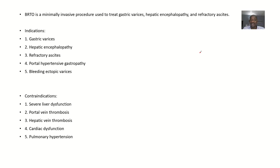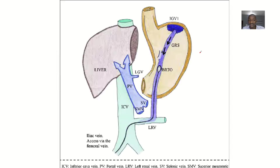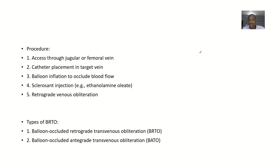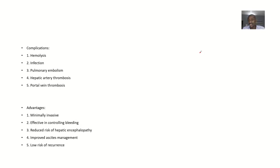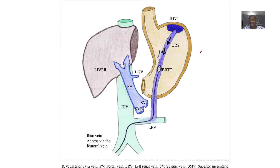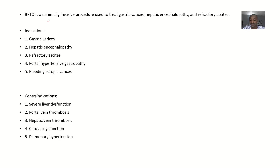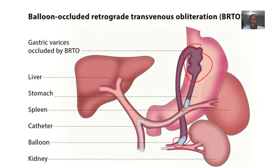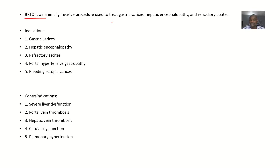We'll talk about this surgical procedure by covering the indications, the procedure, the types, complications, advantages, and all of that. For the definition, the Balloon Occluded Retrograde Transvenous Obliteration is a procedure used to treat disease conditions like gastric varices, hepatic encephalopathy, and refractory ascites.